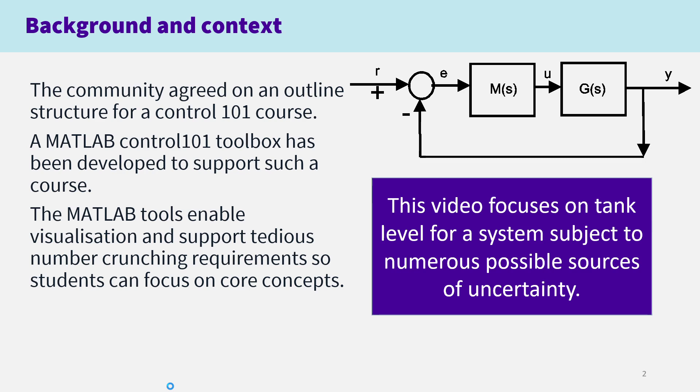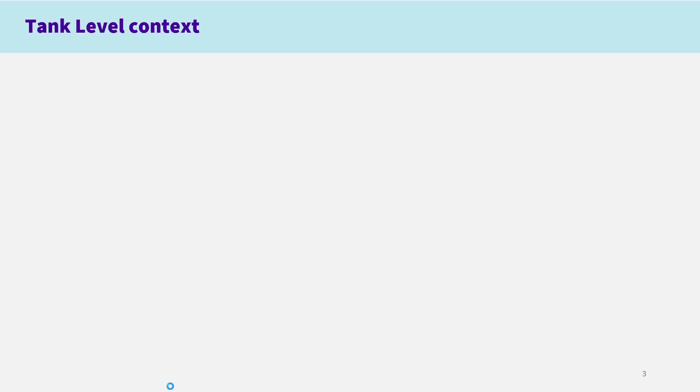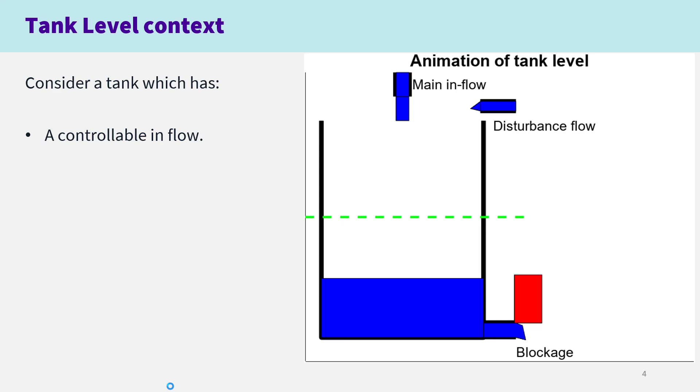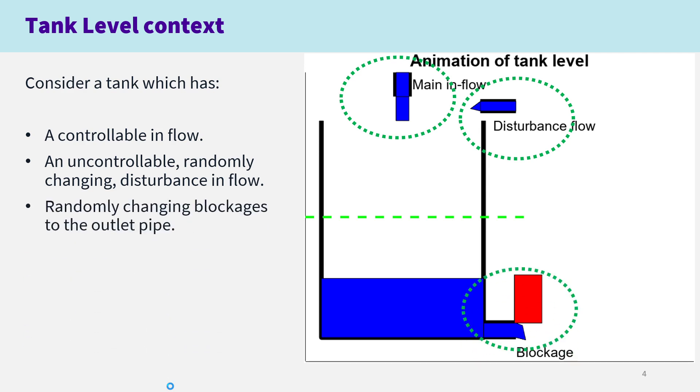Tank level is a common example used in Control 101 courses. Here's a picture of a typical tank with an inflow at the top which you can control. We also have a disturbance flow coming in, which is largely random, and blockages to the outlet pipe represented by this red rectangle. The tank is defined by its cross-sectional area and the area of the outlet pipe.